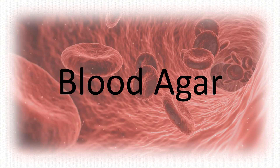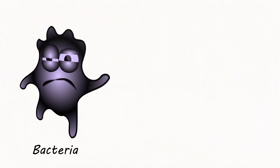In this video we are going to study about blood agar. Blood agar contains general nutrients and five percent sheep blood. It is useful for cultivating fastidious organisms and for determining the hemolytic capabilities of an organism.